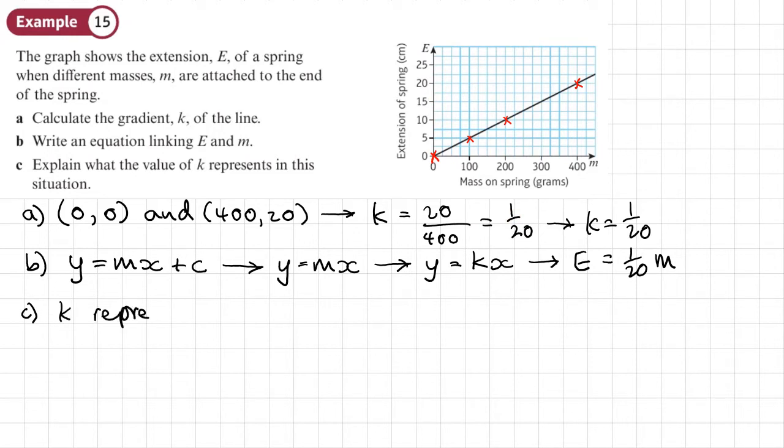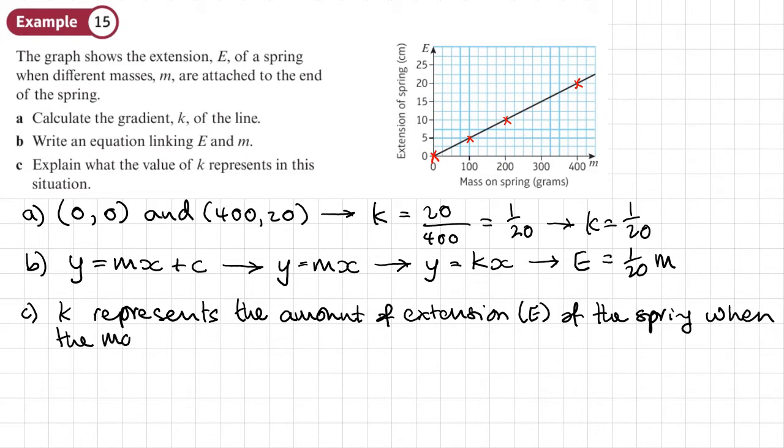k represents the amount of extension e of the spring per gram of increase. We could say for every one gram of increase or per gram.